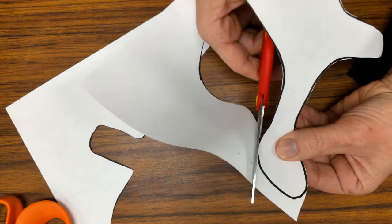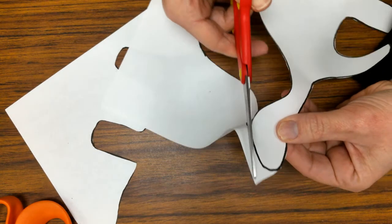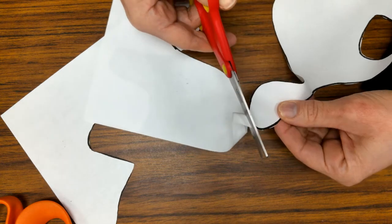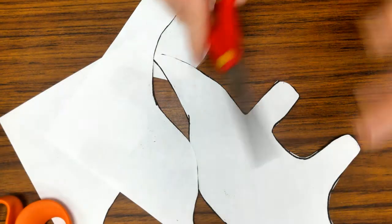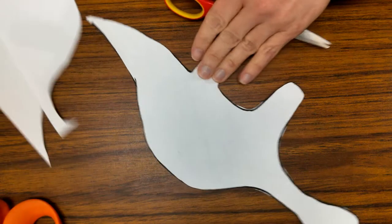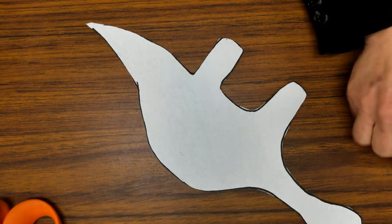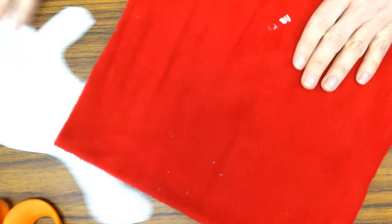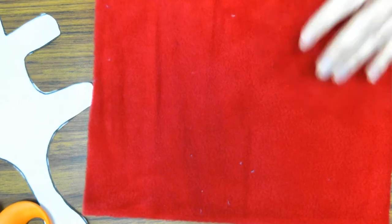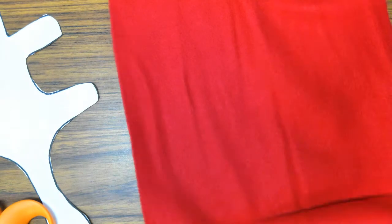Now, once I cut out my pattern, I am ready to lay it out on my fabric. So I'm going to throw away this paper, or even better, recycle it. And I'm going to take my fabric. You should have two pieces or one big piece folded. Mine happens to be one big piece folded.